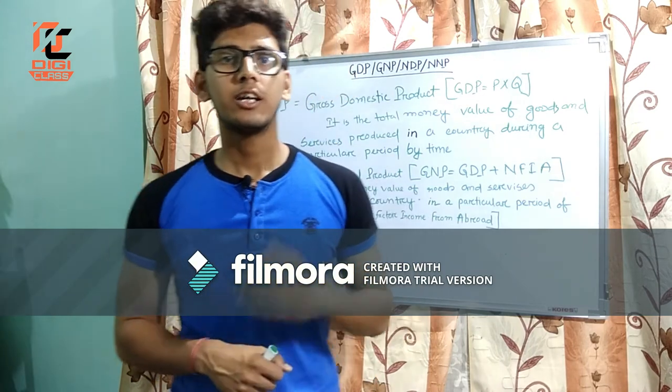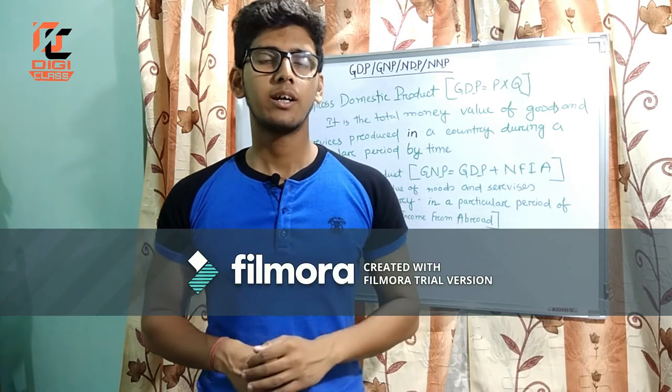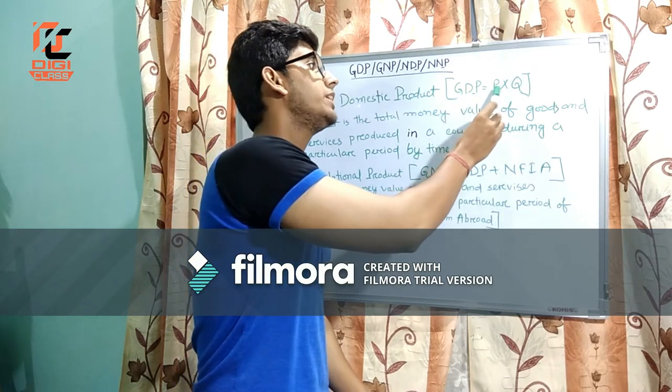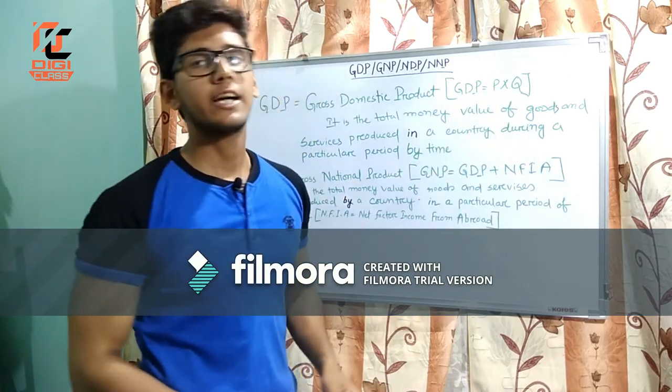Let's start with GDP. GDP stands for Gross Domestic Product and it can be defined as the total money value of the goods and services produced in a country during a particular period of time. We generally consider it to be 1 year. It can be derived by the formula GDP = P × Q, where P stands for prices and Q stands for the total quantity produced in a country.